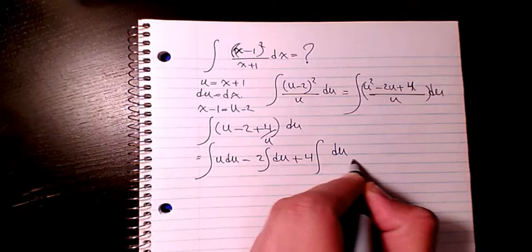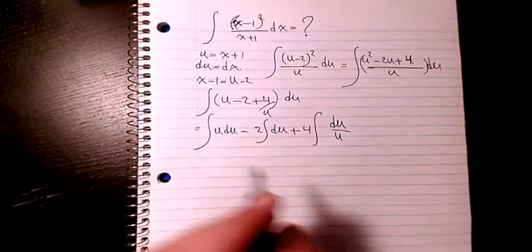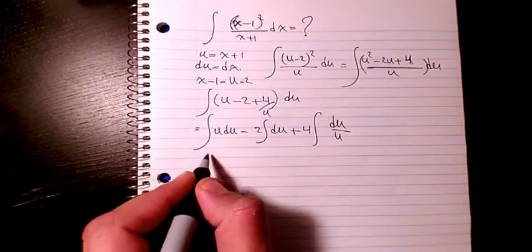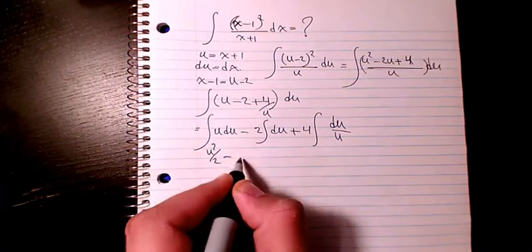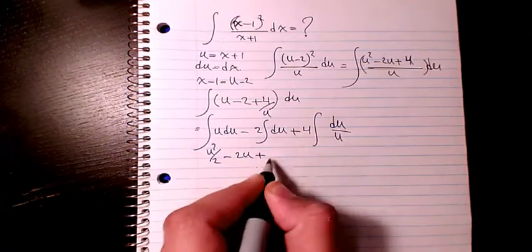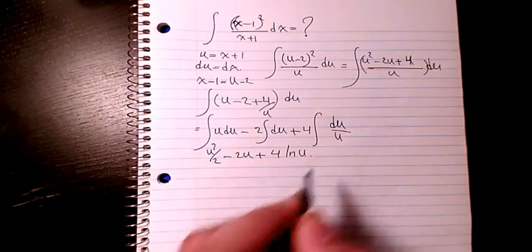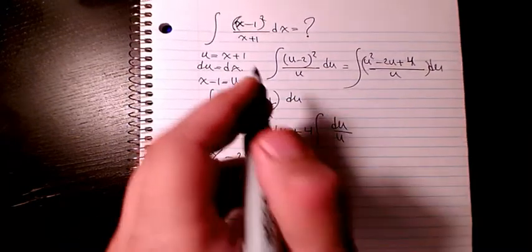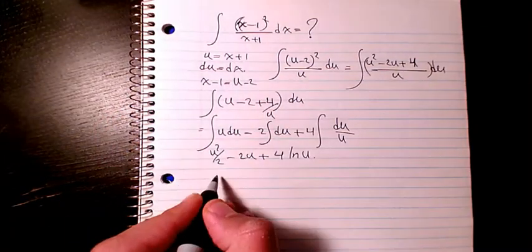The integration of this part is u² divided by 2. The integration here is 2u plus 4 ln(u). And then I substitute it back. Here u is x+1, so it's going to be